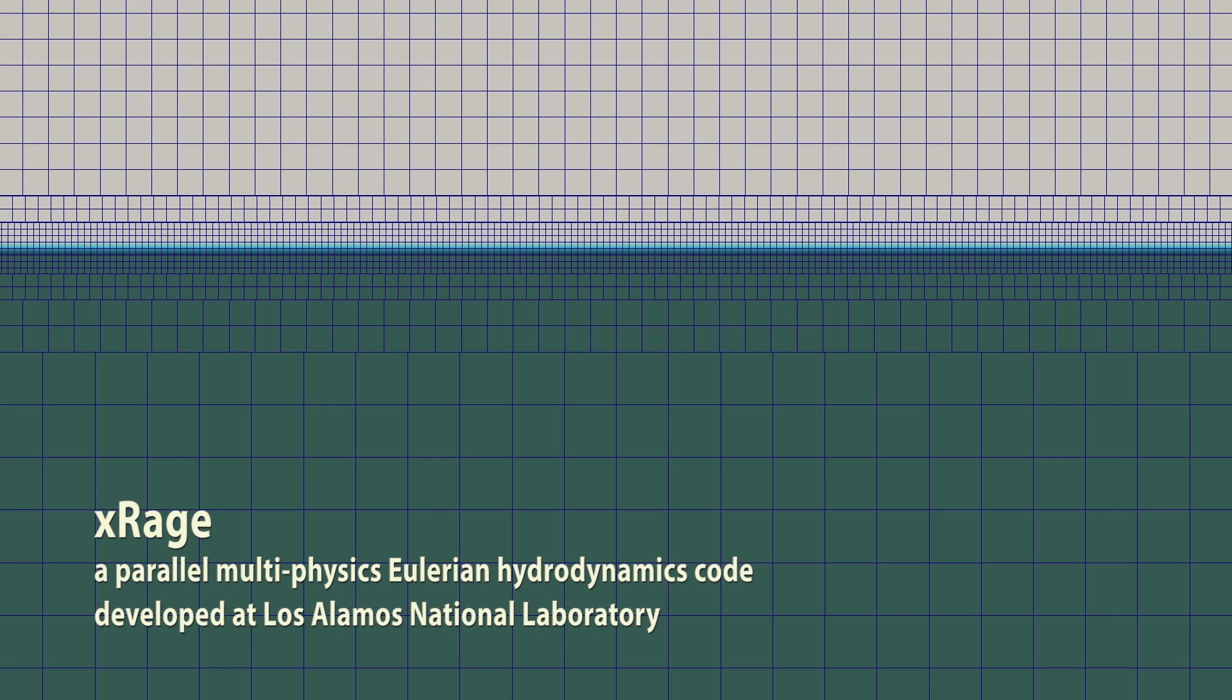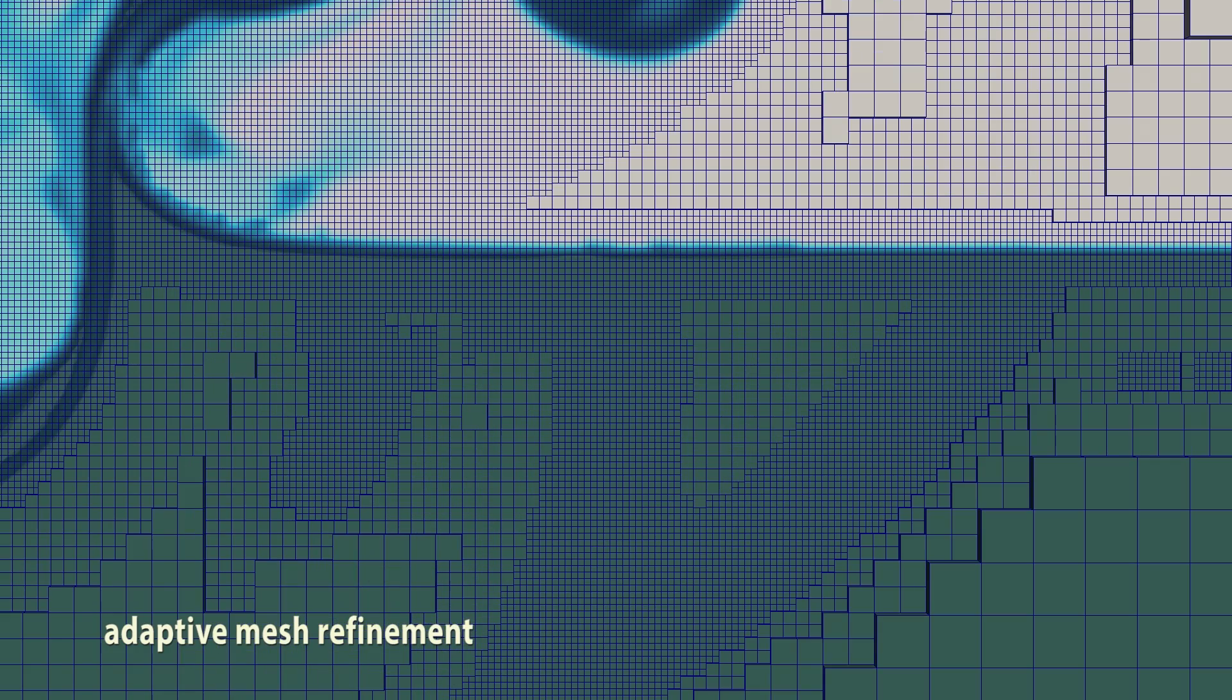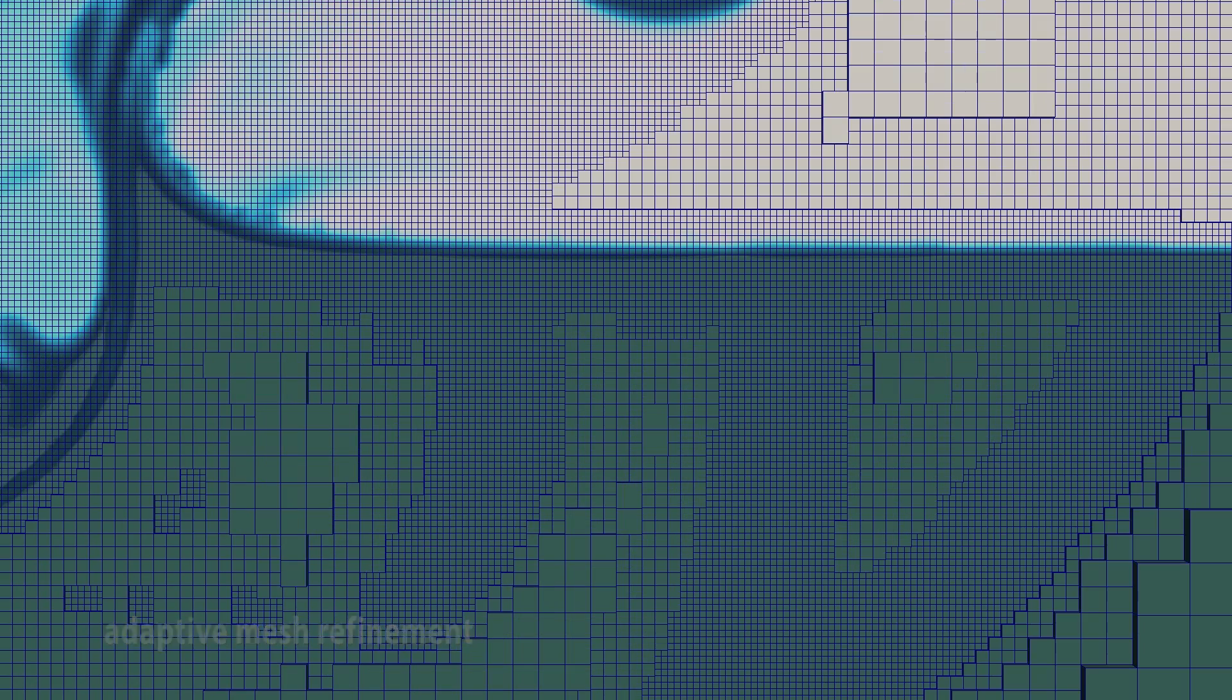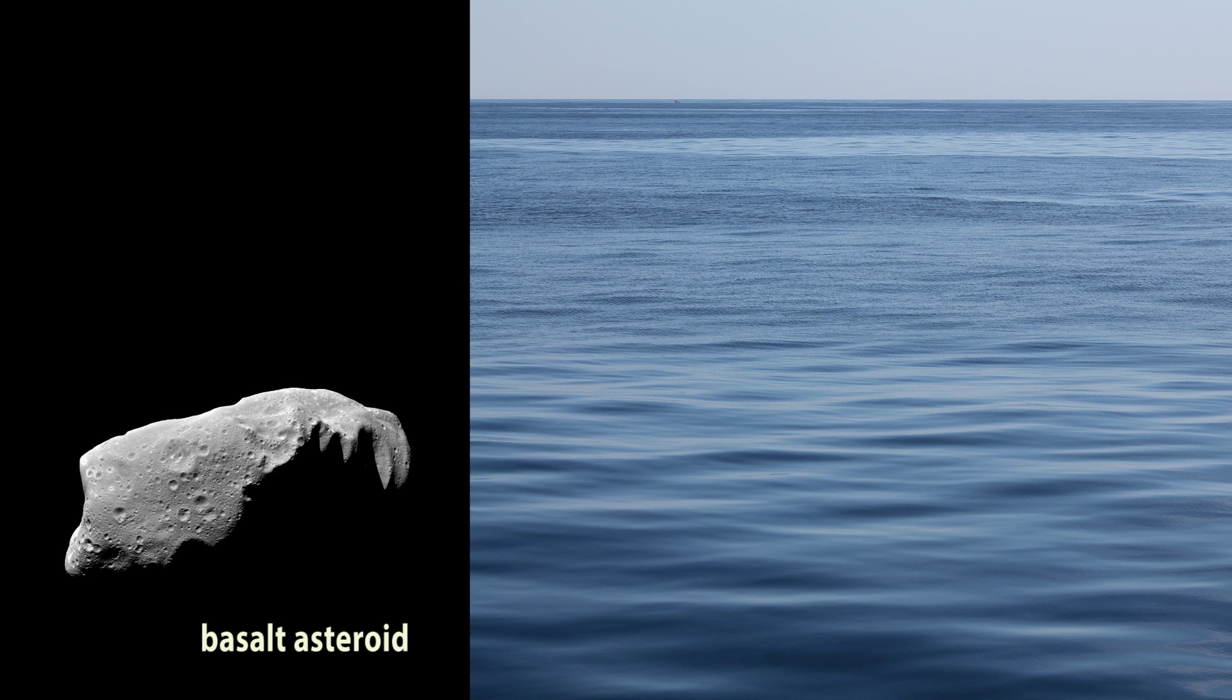We used XRAGE, a parallel multiphysics Eulerian hydrodynamics code. XRAGE uses adaptive mesh refinement to continually subdivide computational cells in important areas, applying more computing power to where it's needed. Our simulations contain three materials: a basalt asteroid, static air, and static water.